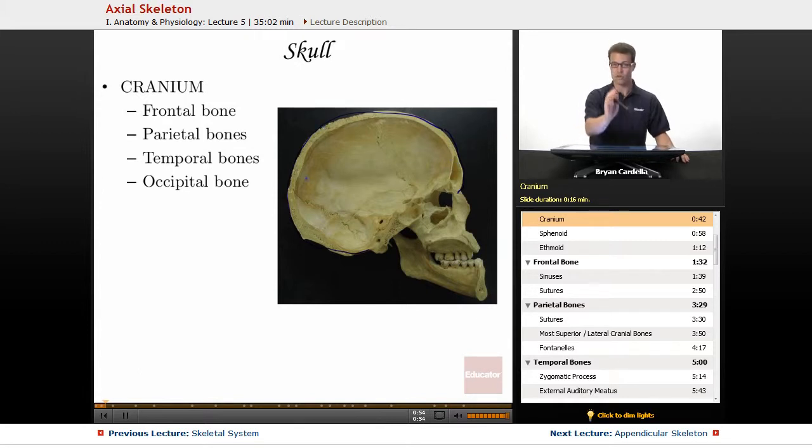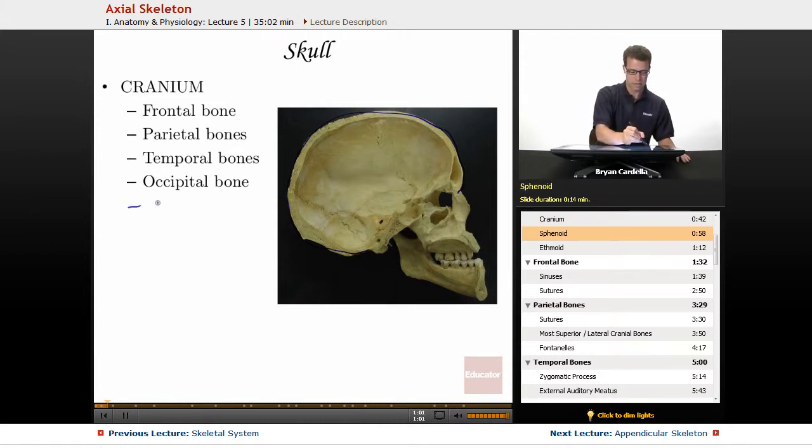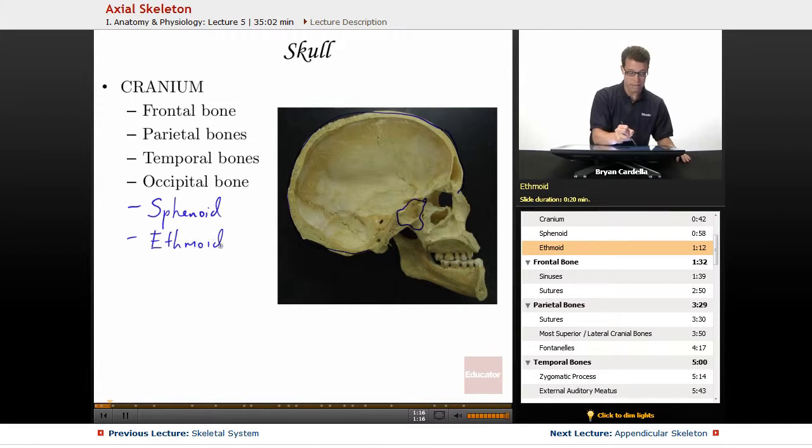You can see we have a sagittal cross section straight through the skull here. There are two other bones that are associated with the cranium. They're forgotten often. That's the sphenoid, which is right here. And the ethmoid bone, which makes up a lot of the nasal cavity. That's in here. So they do articulate with those other cranial bones. They form at least a part of the cranial cavity. So they're considered part of the cranium as well.